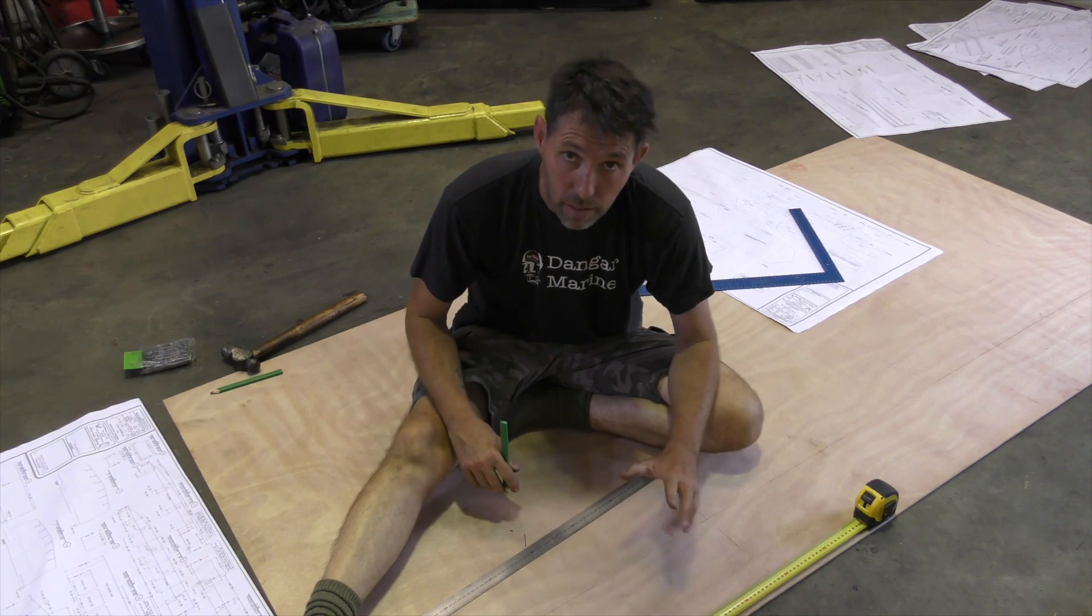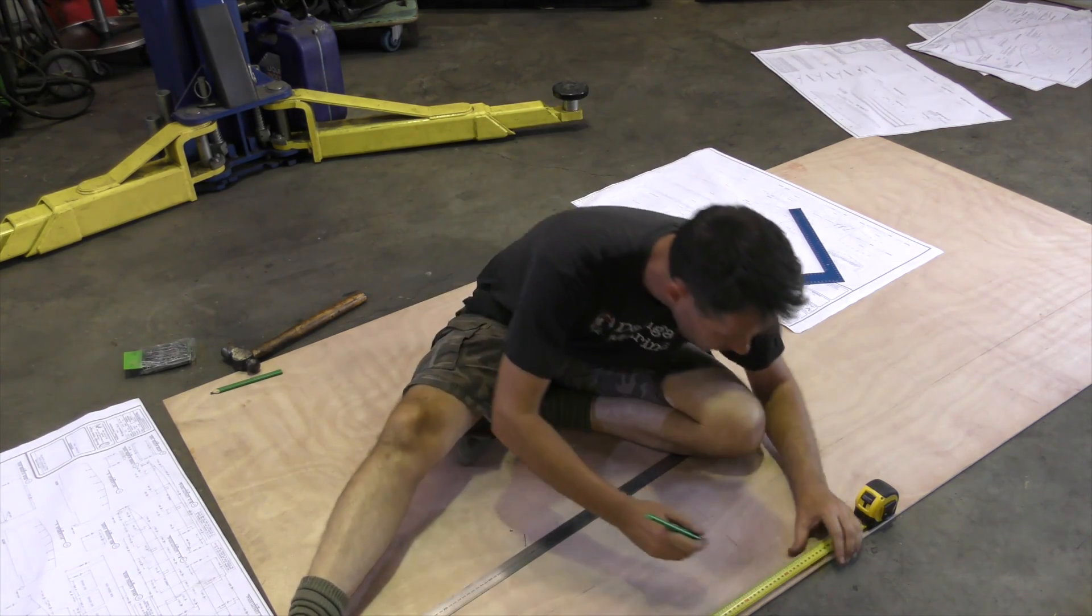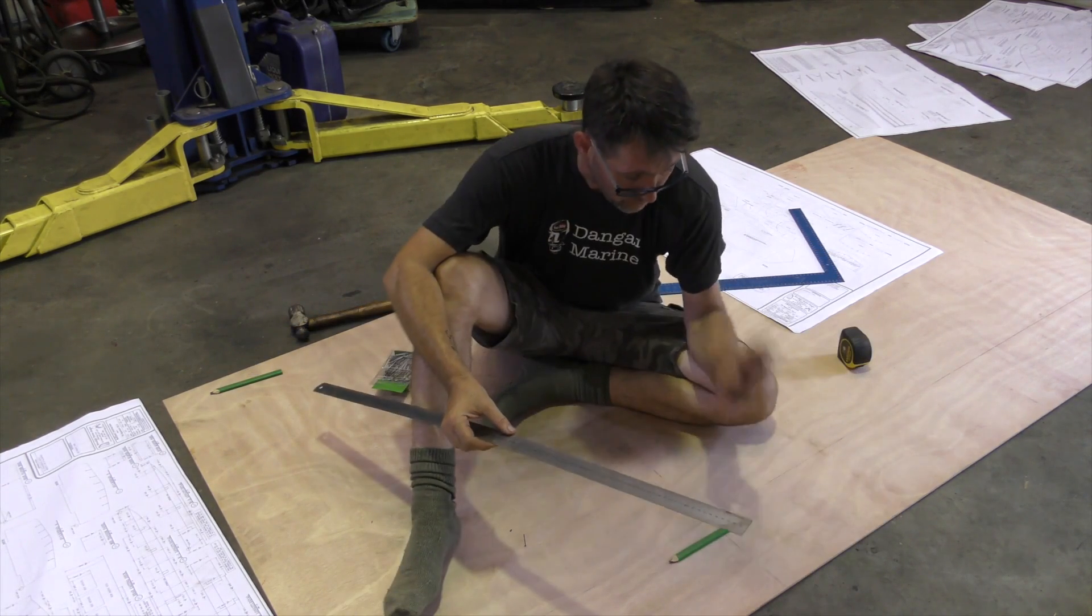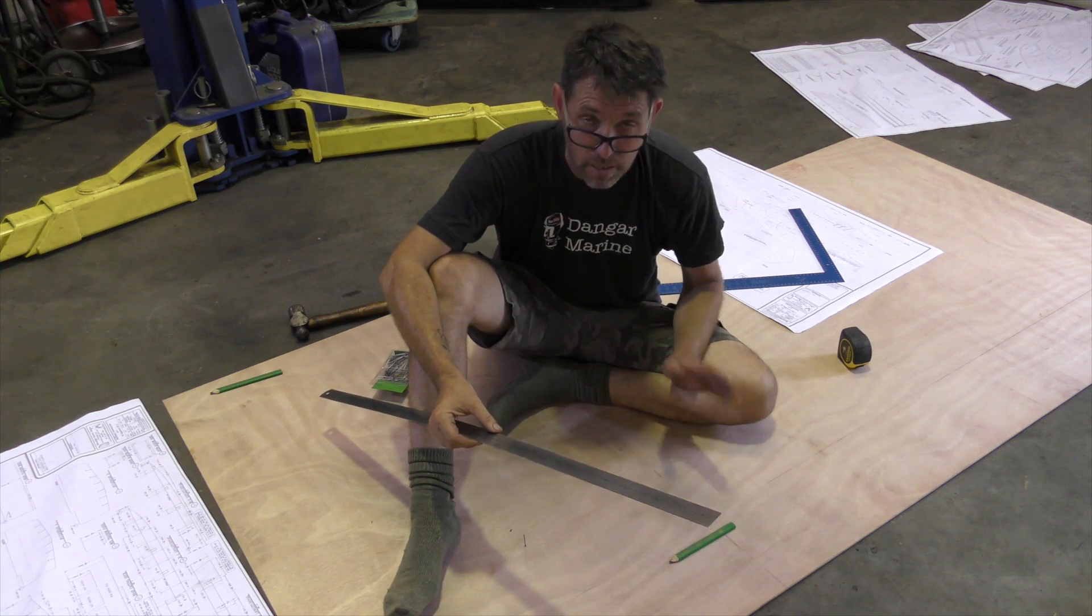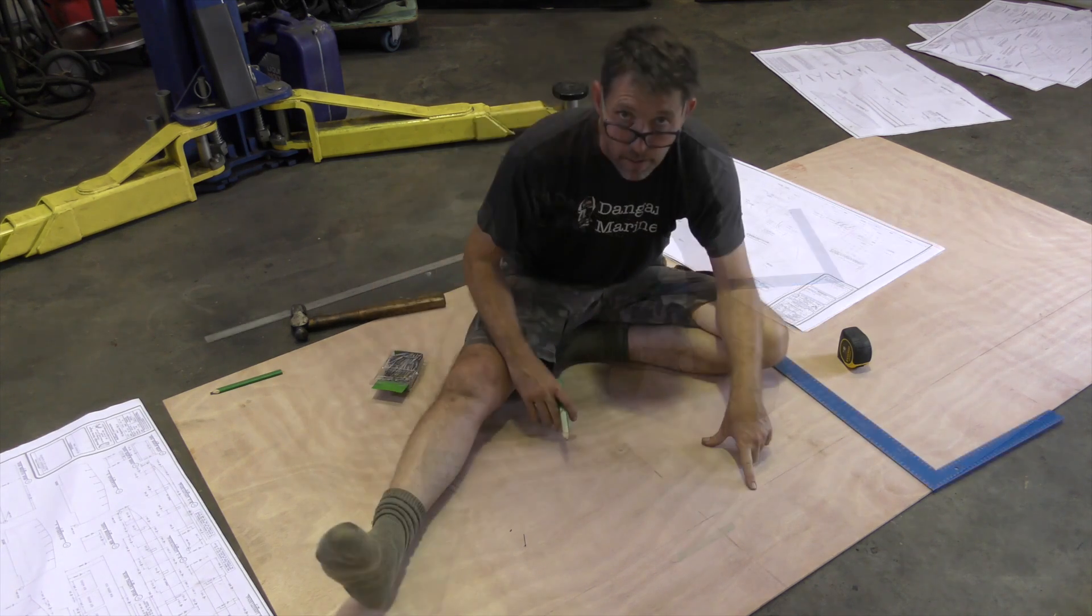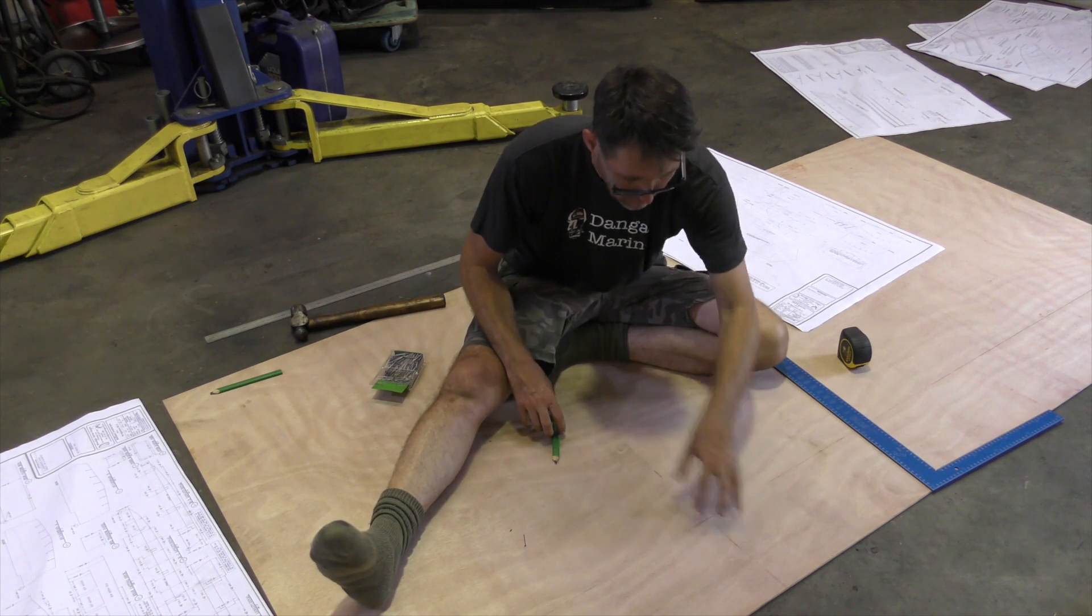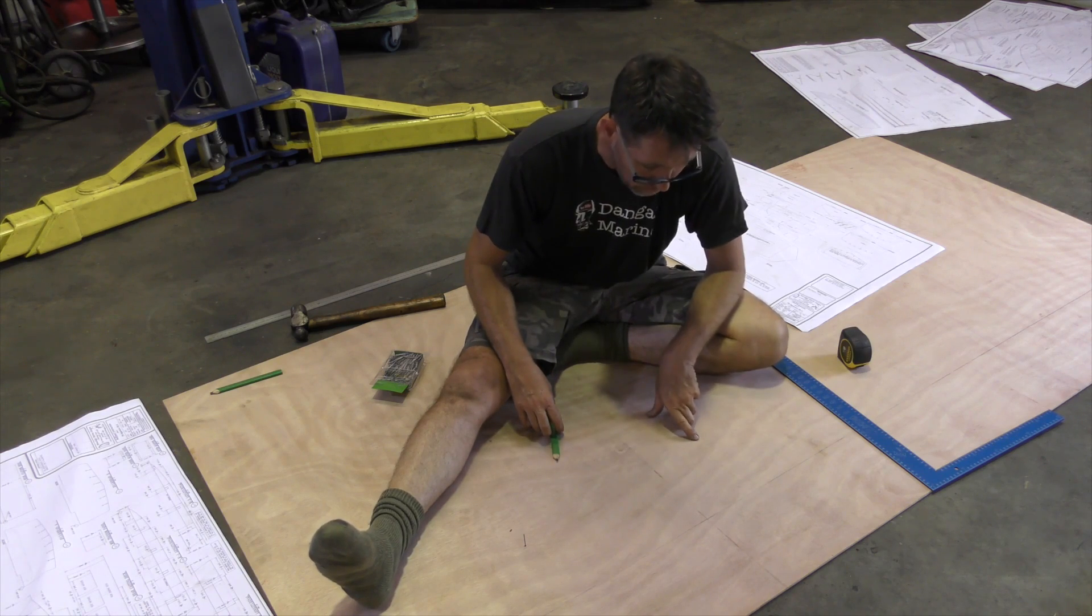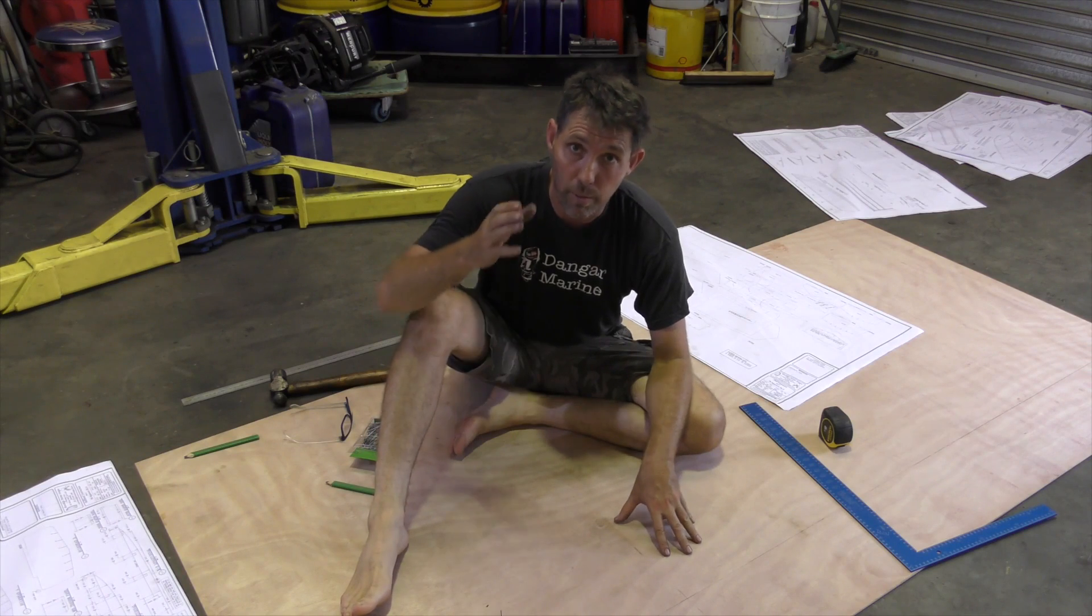Next point we need to measure is another 451 millimeters, so 902 total. Alright, now we need to do a line perpendicular up this way, because there's another cutout that goes here. Cutout comes up from this baseline here. This is actually a bit that gets cut out, this is the longitudinal itself. It comes up, it comes across, and then back down.